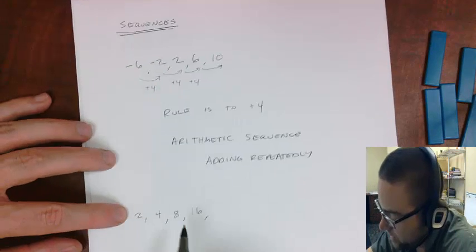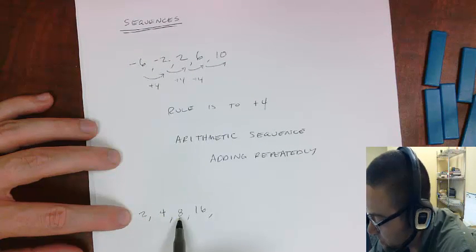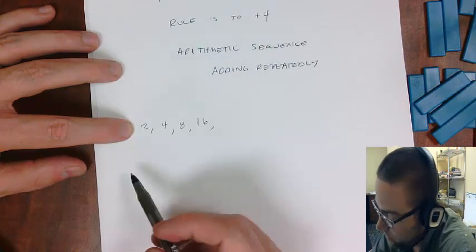And now in this pattern, so this is the next sequence. So it looks like we add 2, but then if we try to add 2 again, we should be at 6, so that doesn't work.